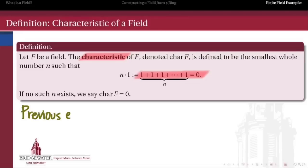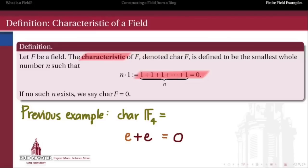So in the previous example of F4, which was additively the Klein 4 group but multiplicatively Z mod 3, what was the characteristic? To find out, we take its multiplicative identity element E and start adding it to itself. If we add E to itself twice, because additively it was the Klein 4 group, we end up back at zero. So the characteristic of the field F4 is 2.